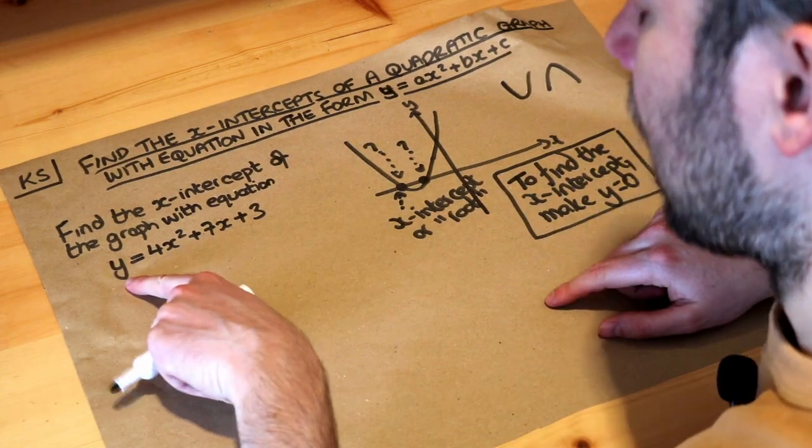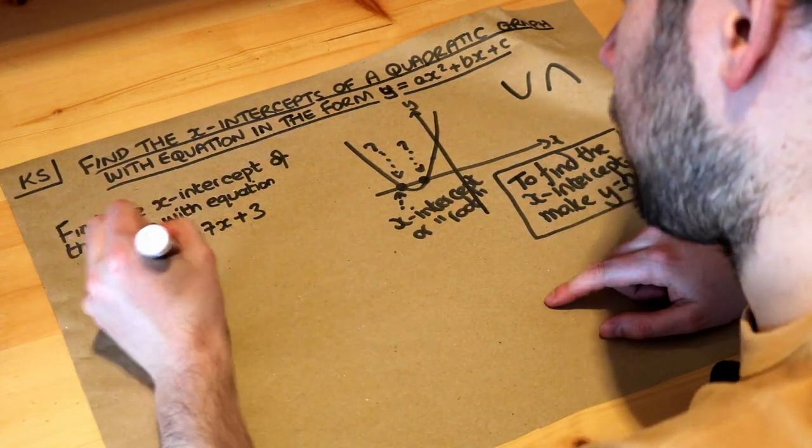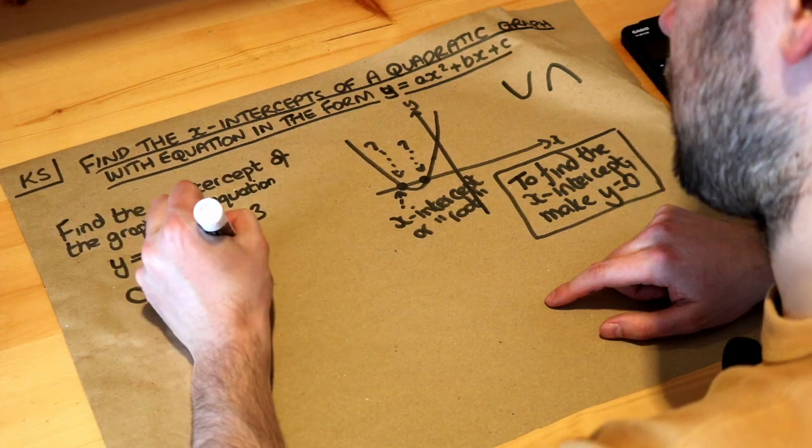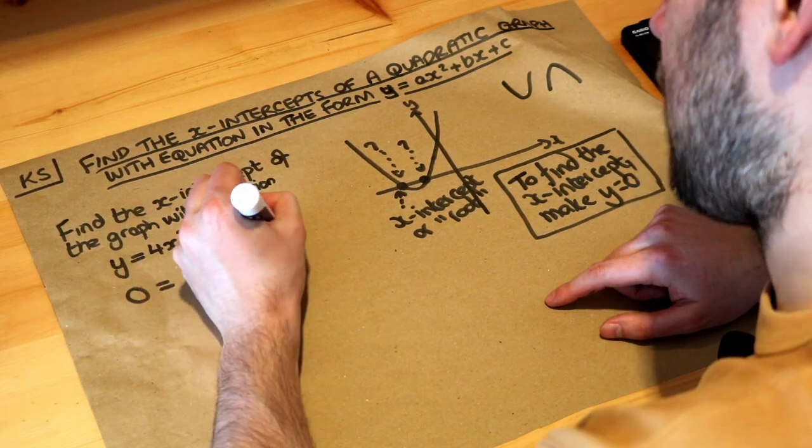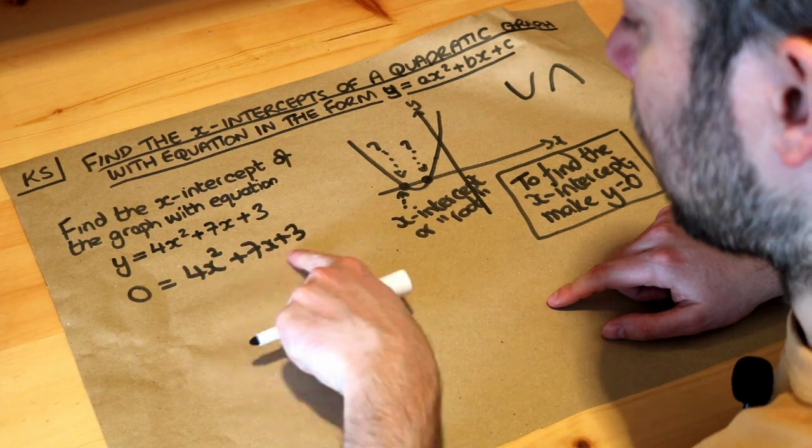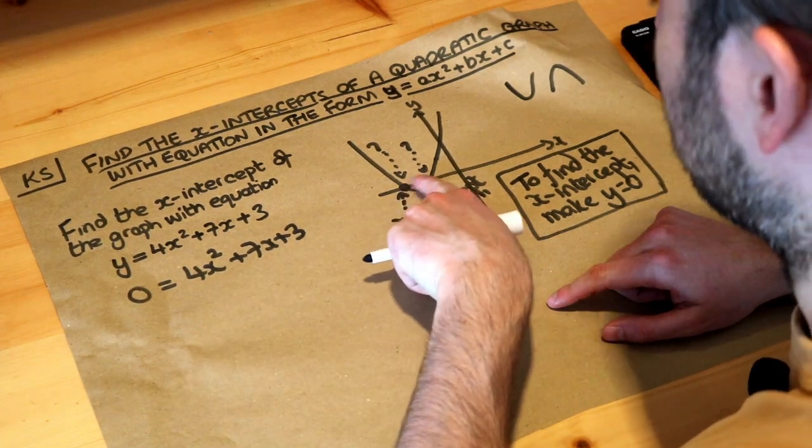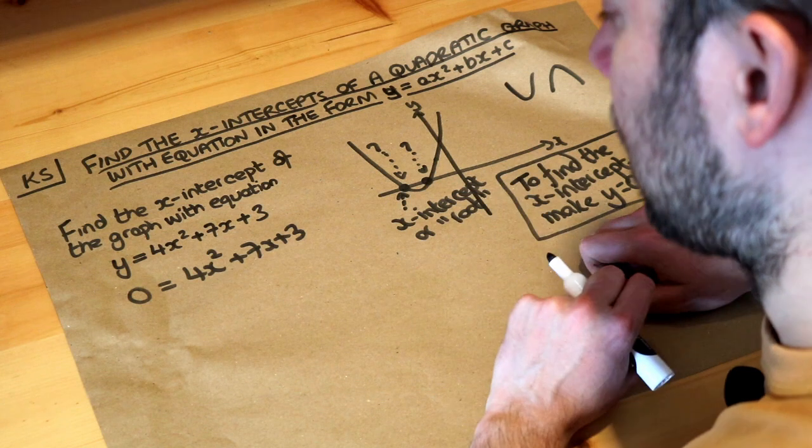So we just need to make that y value zero, so zero equals 4x squared plus 7x plus 3, and then we have to solve this equation to find the values of x here and that will correspond to these two values of x here where the y value is equal to zero.